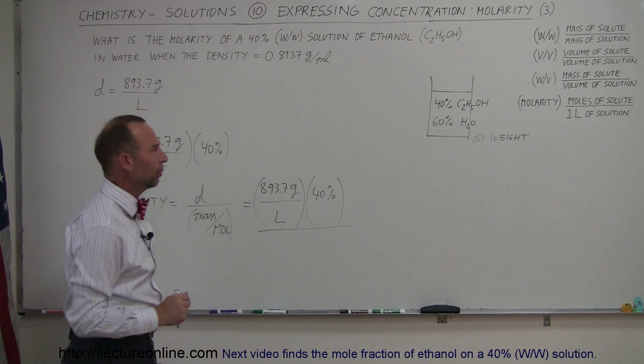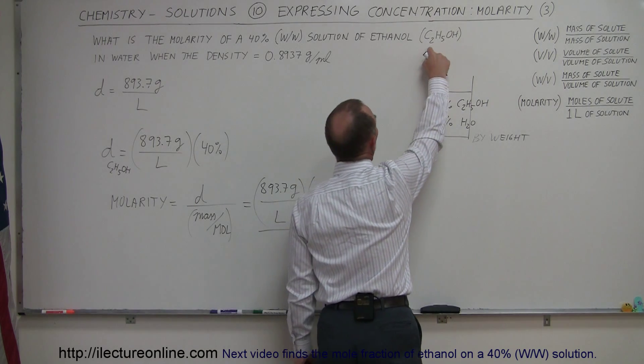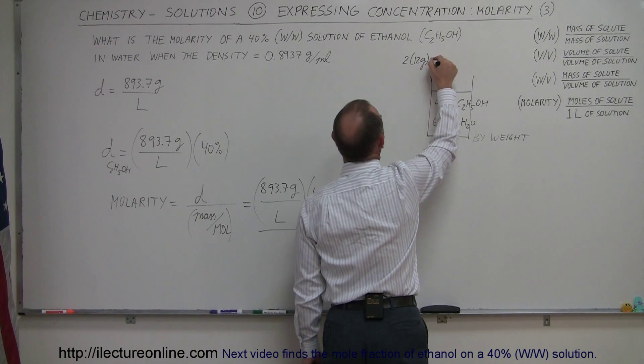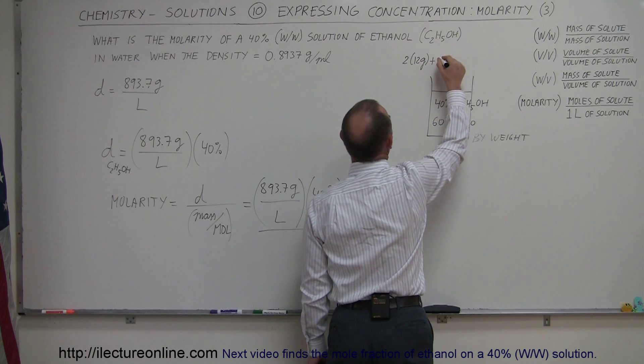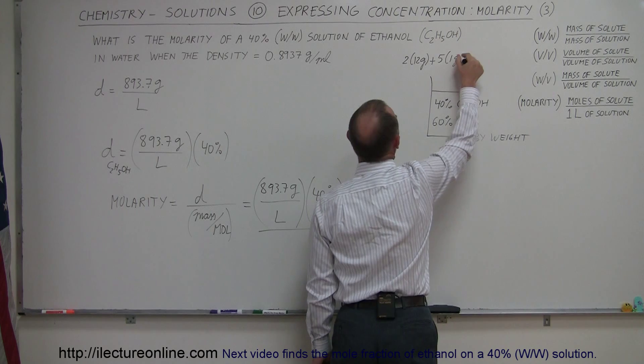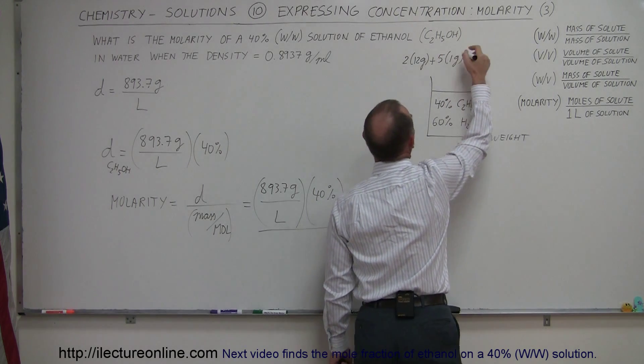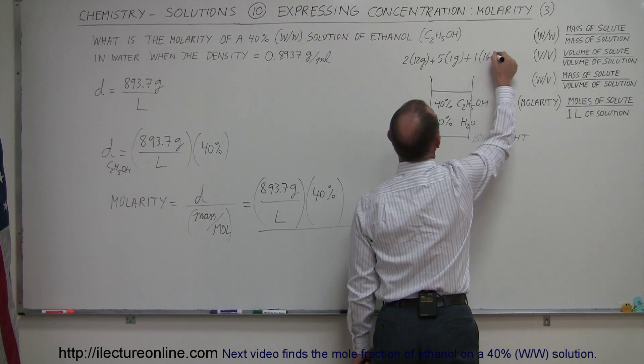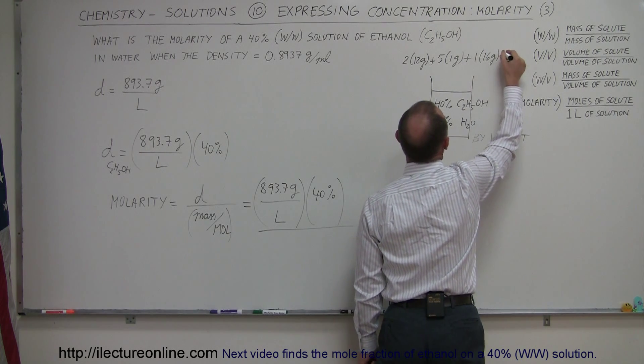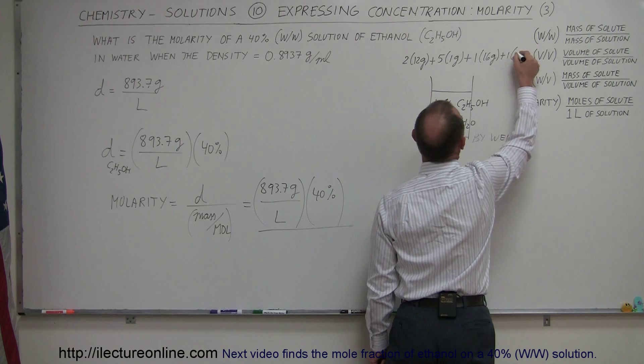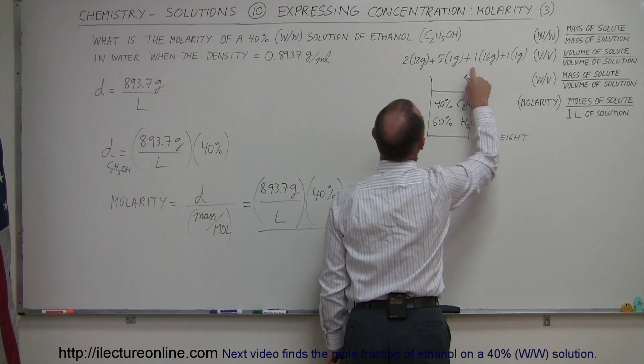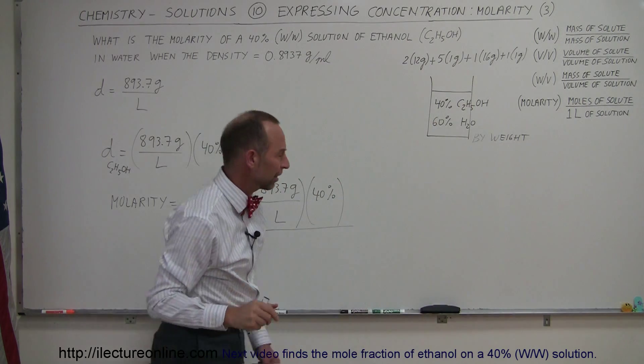All right, what's the molar mass of ethanol? We have two carbons at 12 grams each, so 2 times 12 grams, plus 5 hydrogens at 5 times 1 gram, plus oxygen at 1 times 16 grams, plus another hydrogen at 1 times 1 gram. Adding that together: 24, 29, 30, 46 grams for the molar mass of ethanol.